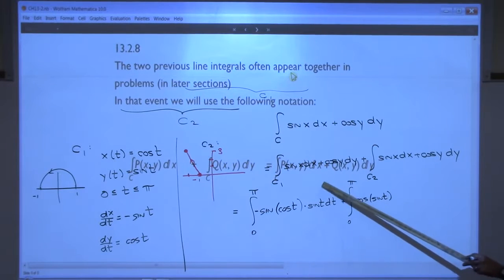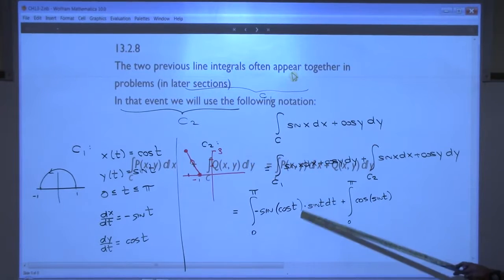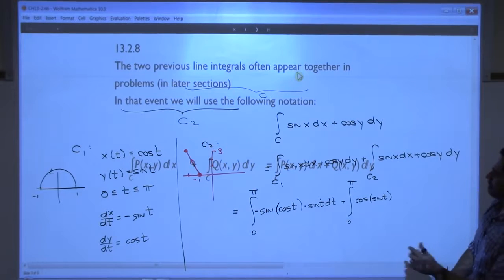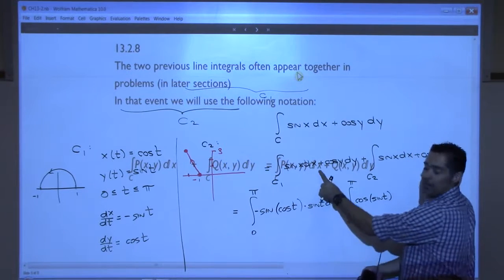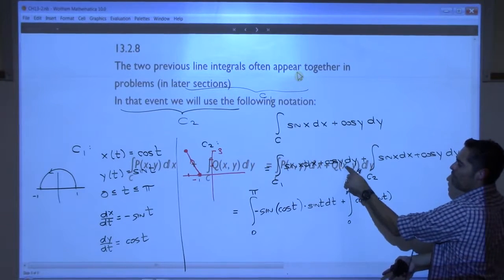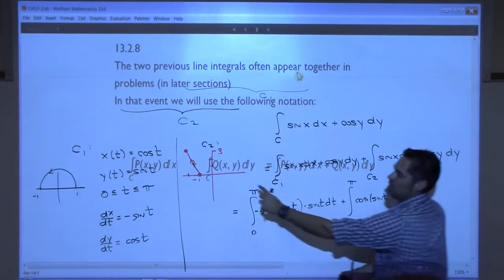This is what we're looking at, right? We have a function, so this piece right here is right on top of it actually. Sine x dx is my p of xy dx. Plus, q of xy is my cosine y and dy is the dy. So I'm splitting that into these two.